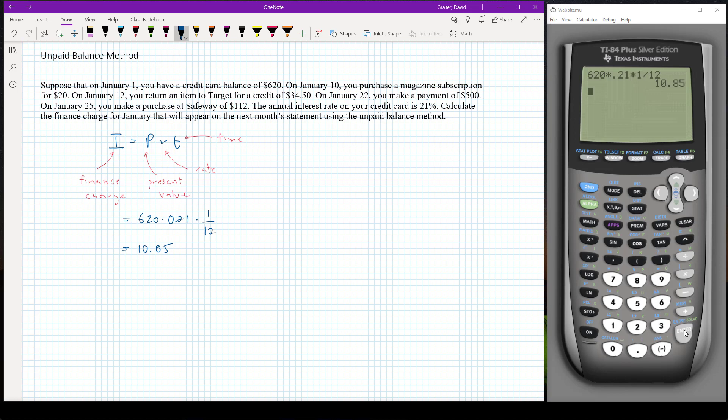So remember our previous month's unpaid balance was six hundred and twenty dollars. So we have to add on the finance charge that we just found. We need to add our purchases. Remember we had a purchase of twenty dollars. So we're gonna have to add that in. That increases our balance. We also had a purchase of a hundred and twelve. So that also increases our balance.